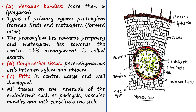Next are conjunctive tissues, which are parenchyma cells found between the xylem and phloem. Xylem and phloem are located alternately — xylem, phloem, xylem, phloem, and so on. Conjunctive tissues are found in between them, and these green cells are the conjunctive tissues.